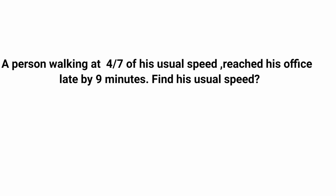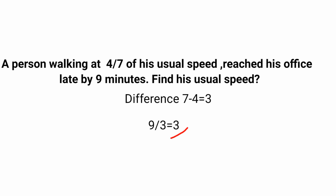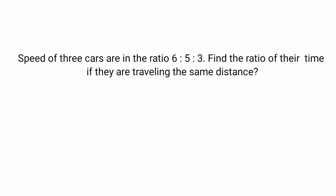Here a fraction 4/7 is given for the speed. The first step is to take the difference of the numerator and denominator: 7 minus 4 equals 3. The time given is 9 minutes, so divide 9 by 3 to get 3. The second step is to multiply this result (3) by the numerator of the fraction: 3 into 4 equals 12 minutes. So the usual time is 12 minutes.